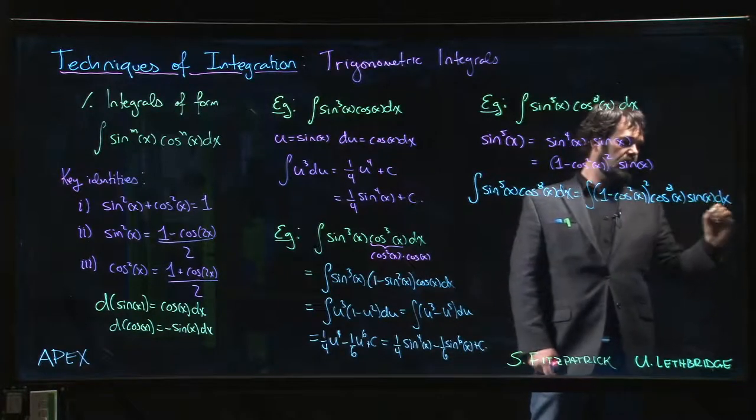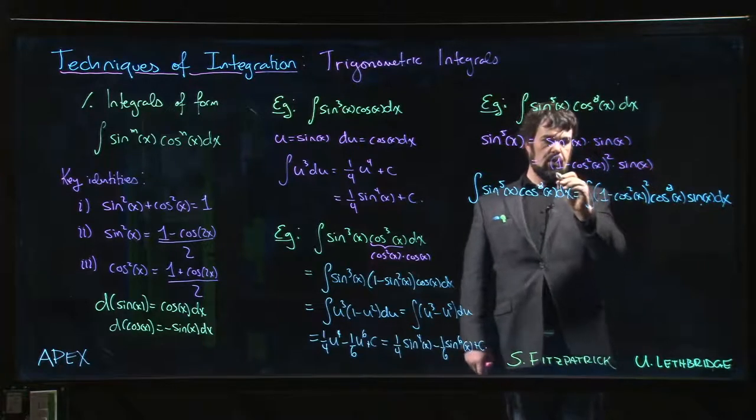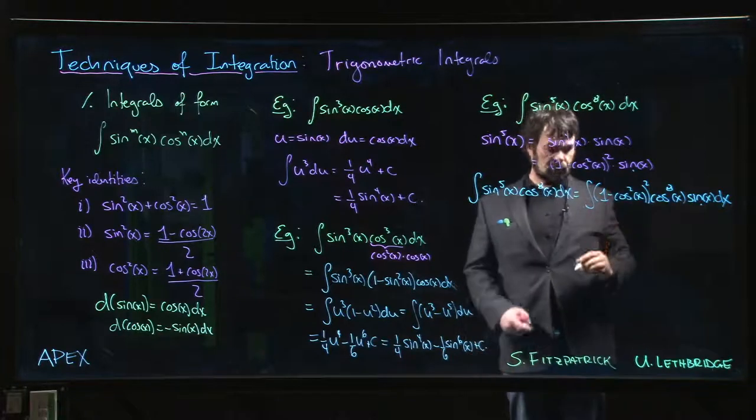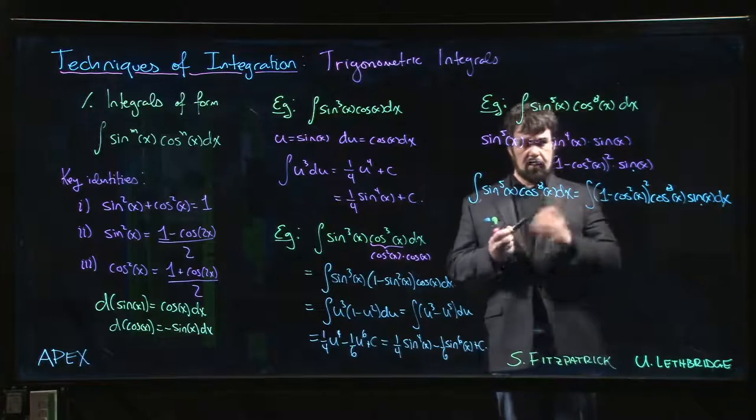That sine x is this one here, right? We have the (1 - cos²x)² sine x going there, and we also have that cos to the eighth.